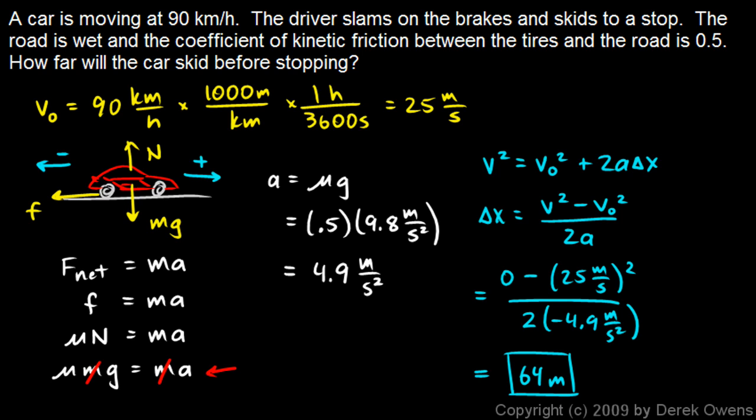So, in the previous problem, you might remember, when the coefficient of friction was 0.8 on the dry road, it stopped in 40 meters. So, on the wet road, it takes a significantly longer distance to stop. That's why you need to take that into account when you're driving. Wet roads don't have as much friction. So, you can't accelerate as quickly, and more importantly, you can't stop as quickly and can't turn as easily when the roads are wet.